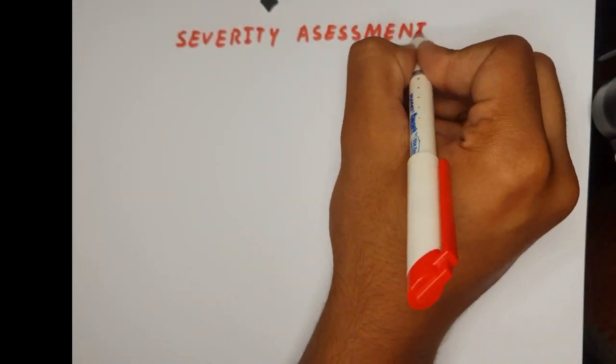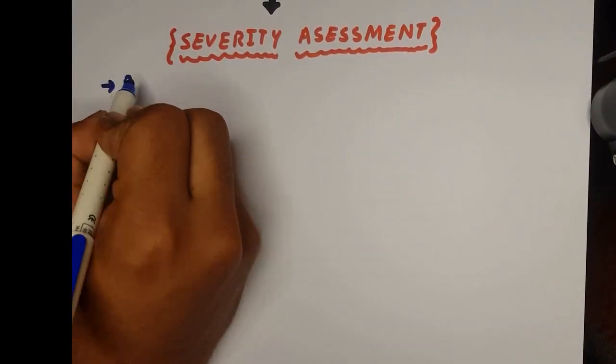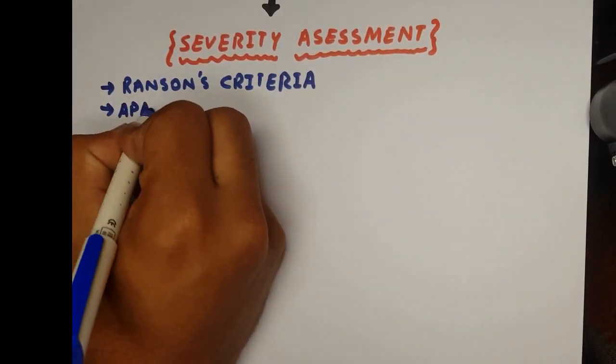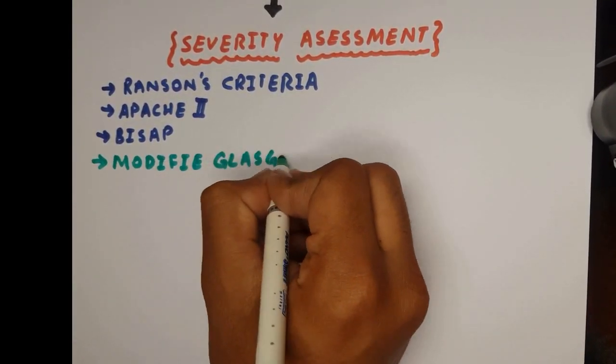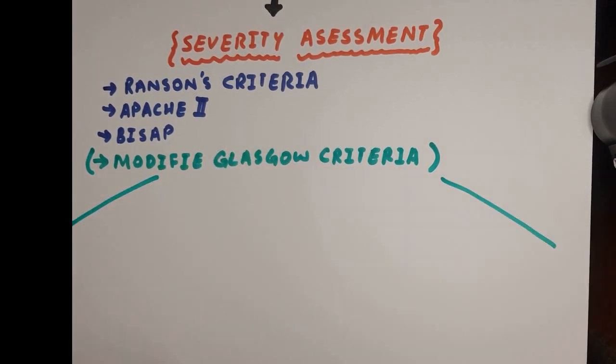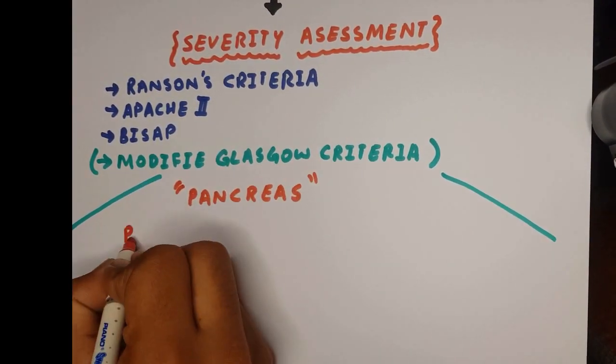Once we do have our diagnosis, we need to assess the severity, and of all the criteria we have, the modified Glasgow criteria is the one we use, and a very handy mnemonic is PANCREAS.